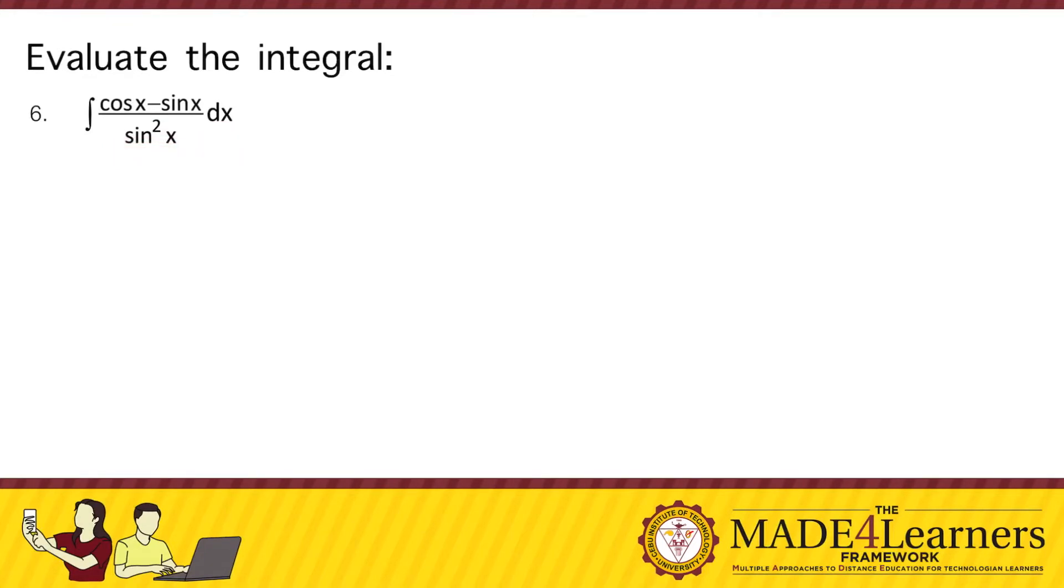Now in this given, it's quite obvious that we cannot perform integration by substitution directly because we cannot eliminate either the denominator or the numerator by doing so. So what we are going to do here, because we have two terms in the numerator and a single term in the denominator, is to separate the integrand into two fractions.